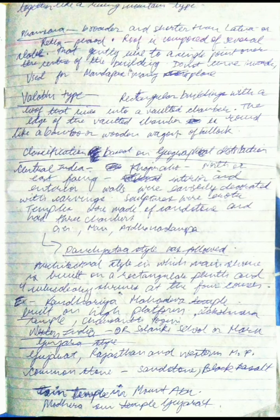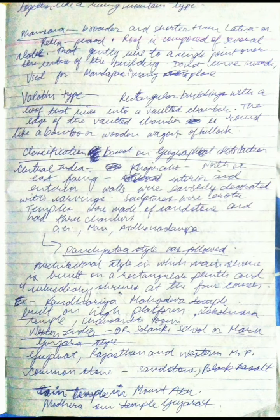The Solanki school, also known as the Maru-Gurjara style, is a North Indian style present in Gujarat, Rajasthan, and Western Madhya Pradesh. Common stones used are sandstone and black basalt. Famous examples include the Jain temples at Mount Abu and the Modhera Sun Temple in Gujarat.